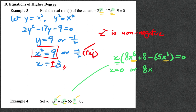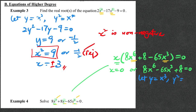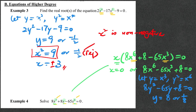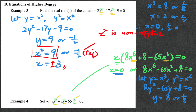Writing it in proper order: 8x to the power 6 minus 65x cubed plus 8 equals 0. For the second part, let y equal x cubed, so y squared equals x to the power 6, which means the equation changes to 8y squared minus 65y plus 8 equals 0 — our quadratic form. Using the calculator, y is 8 or 1 over 8, which means x cubed equals 8 or 1 over 8. Using your calculator, x equals 2 or 1 over 2. Together with the first answer of x equals 0, this question has totally three answers: 0, 1 over 2, and 2 respectively.